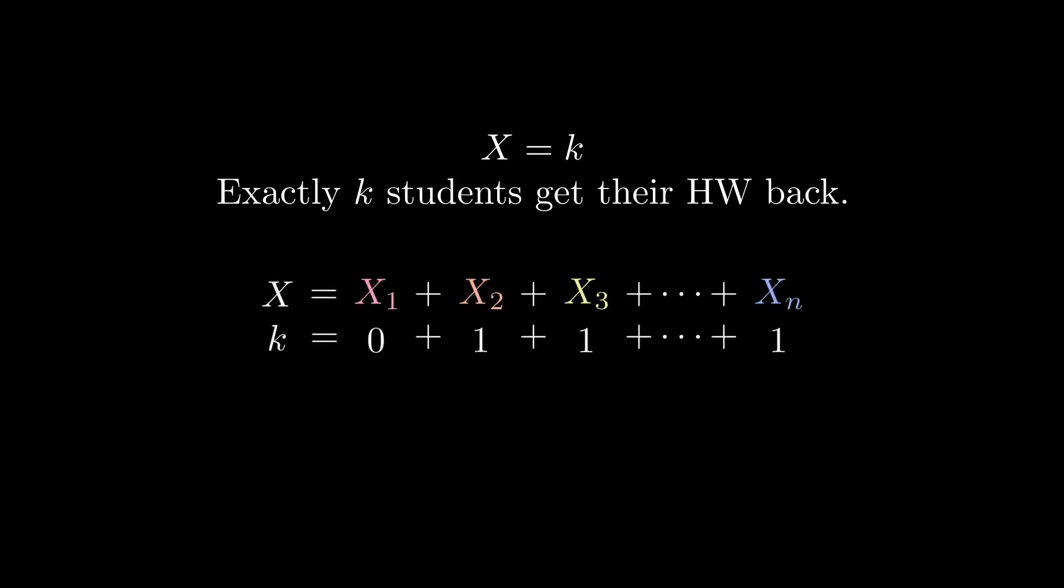Now let's get back to E of X. Let's look at the situation where exactly k points are fixed. That's the event X equals k, where exactly k students got their own homework back. And as events, we can see why X equals X sub 1 plus X sub 2 and so on.